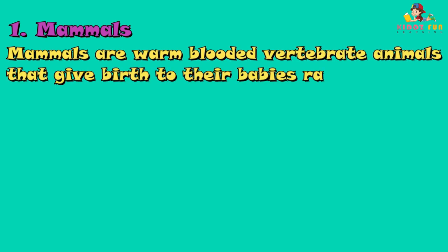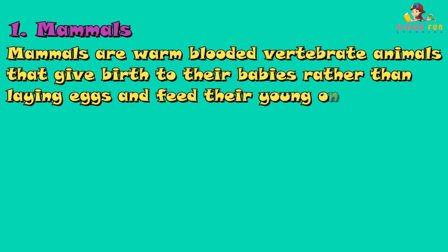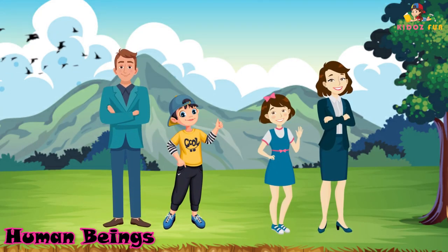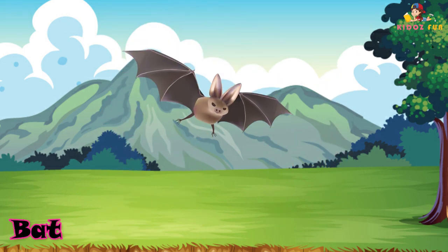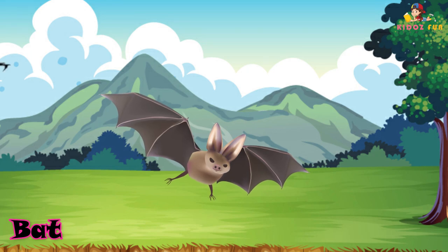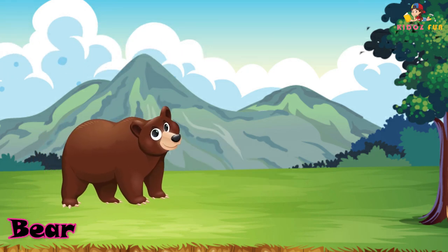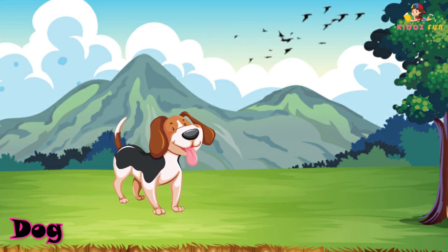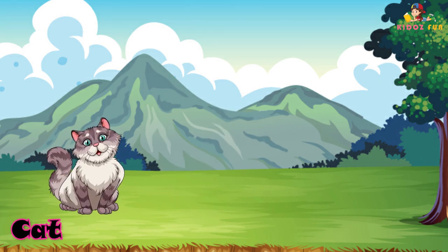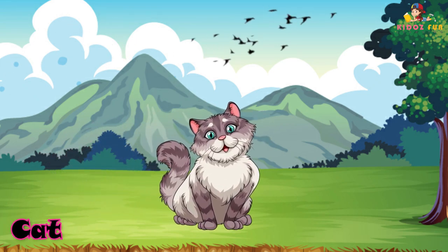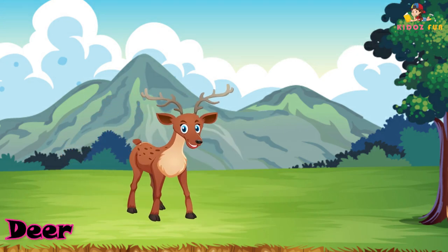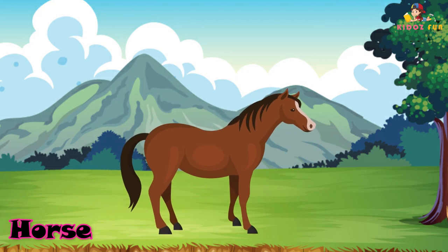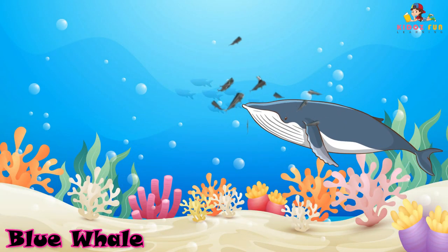Mammals are warm-blooded vertebrate animals that give birth to their babies rather than laying eggs, and feed their young ones with milk. Some examples are human beings, bat, bear, dog, cat, deer, horse, and blue whale.